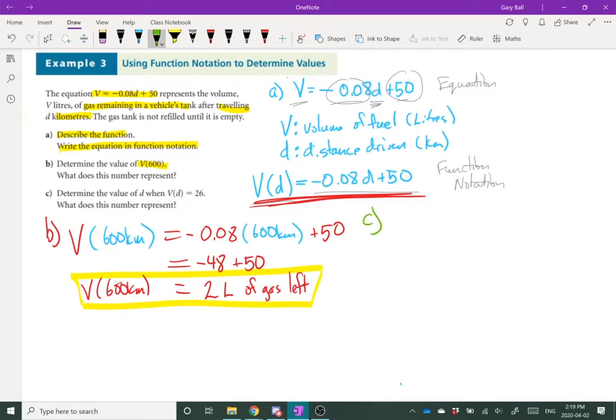Move on to C. C's a little different than B. In fact, it's kind of the opposite. We're looking at V of D equals 26. So over here, I put an independent variable, or a number into the function, and my function gave me an output, an end answer. This time, it gives me the answer, and wants to know what do I put into it in order to get that answer. Same basic process, we're just going to end up working backwards.